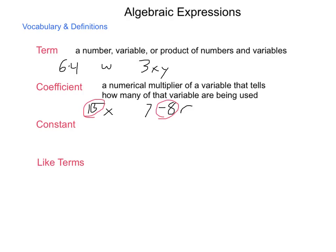Our next term is constant. A constant is a number that is being added or subtracted without a variable. In the expression 7 minus 8R, 7 acts as our constant. Since it has no variable attached to it, it will always be a 7. That is constant.